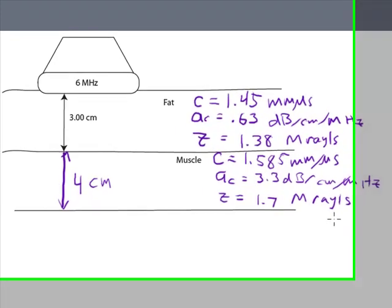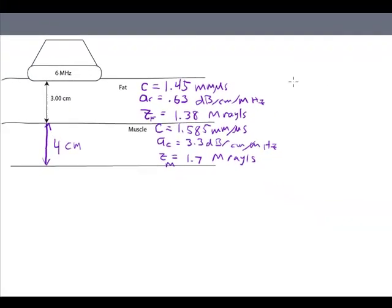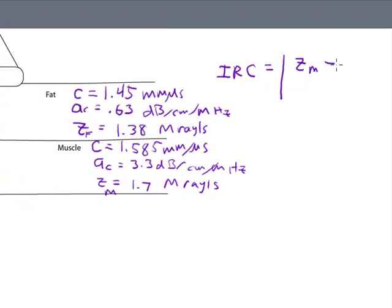So just to get started I'm going to look at the reflection coefficient at this interface first. I'm going to calculate that first just to get that out of the way. The intensity reflection coefficient, which tells you how much of this is going to be reflected, is equal to the difference between the two impedances, so the difference between the muscle impedance and the impedance of the fat, divided by the sum of the two impedances, muscle and fat, and then that is squared.